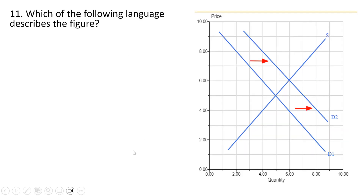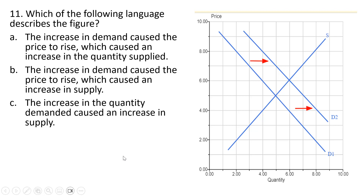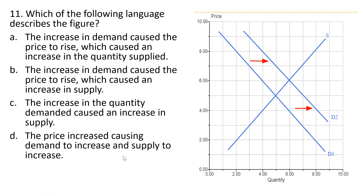Question 11 — which of the following language describes the figure? Answer choice A: the increase in demand caused the price to rise, which caused an increase in the quantity supplied — that is the correct language for this diagram. Answer choices B, C, and D are incorrect because the supply curve did not shift right; we did not have an increase in supply, we had an increase in the quantity supplied. Answer choice A.